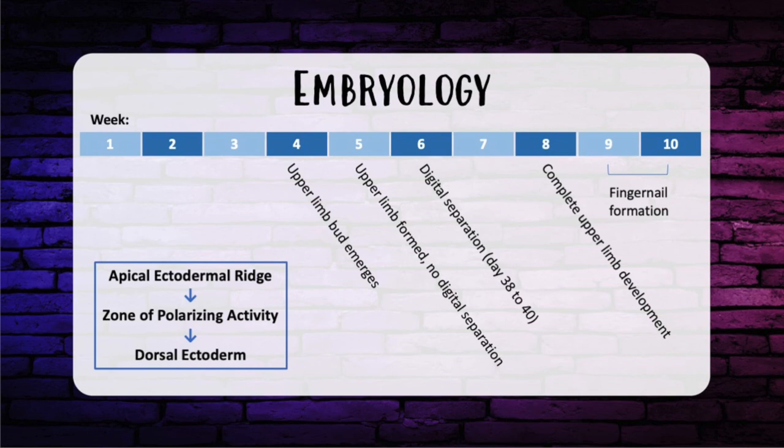The limb develops in a proximal to distal direction from your shoulder to your wrist, controlled by the apical ectodermal ridge, otherwise known as the AER. This is a thickened layer of ectoderm overlying the limb bud. The AER secretes FGF — fibroblast growth factor — and signals the underlying mesoderm to differentiate. Disruption of the AER results in truncation of the limb.